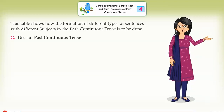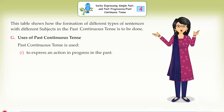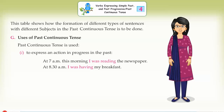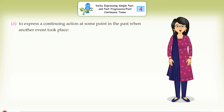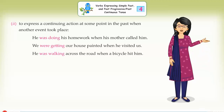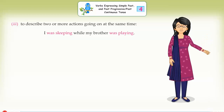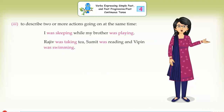Uses of past continuous tense. First, to express an action in progress in the past: At 7 a.m. this morning I was reading the newspaper. At 8:30 a.m. I was having my breakfast. Second, to express a continuing action at some point in the past when another event took place: He was doing his homework when his mother called him. We were getting our house painted when he visited us. He was walking across the road when a bicycle hit him. Third, to describe two or more actions going on at the same time: I was sleeping while my brother was playing. Rajiv was taking tea, Sumit was reading and Vipin was swimming.